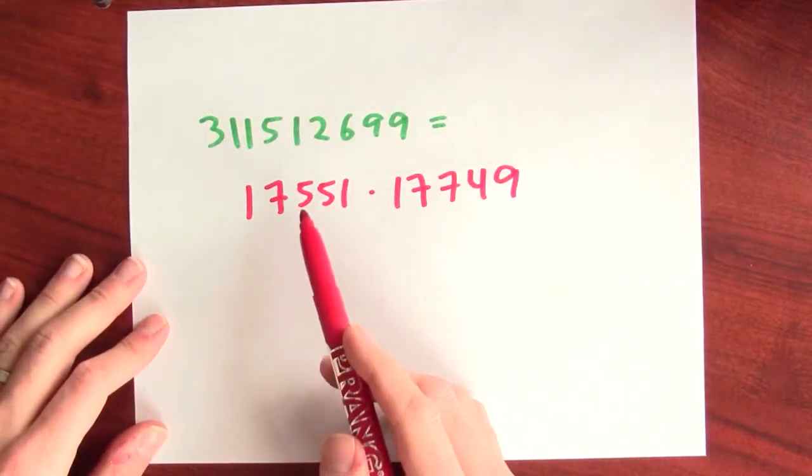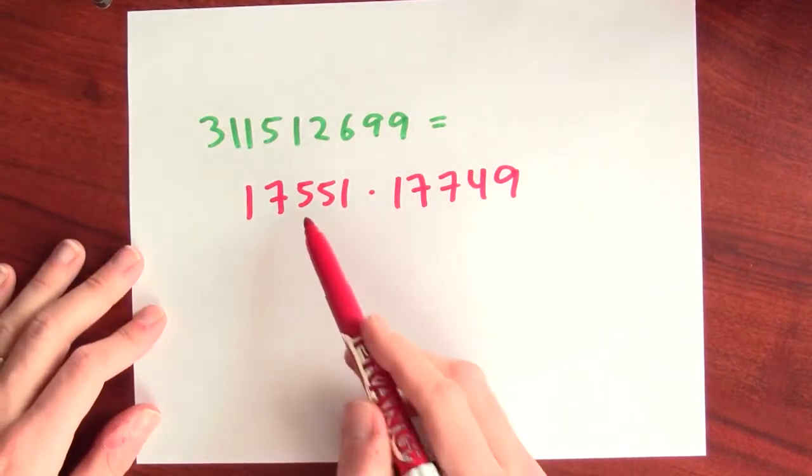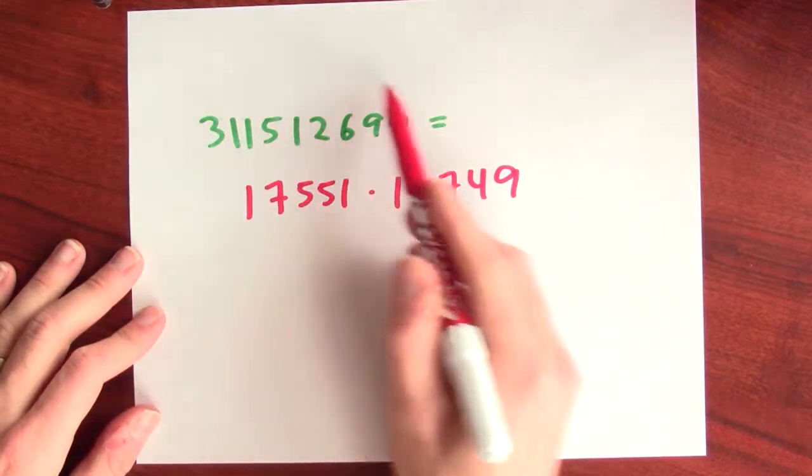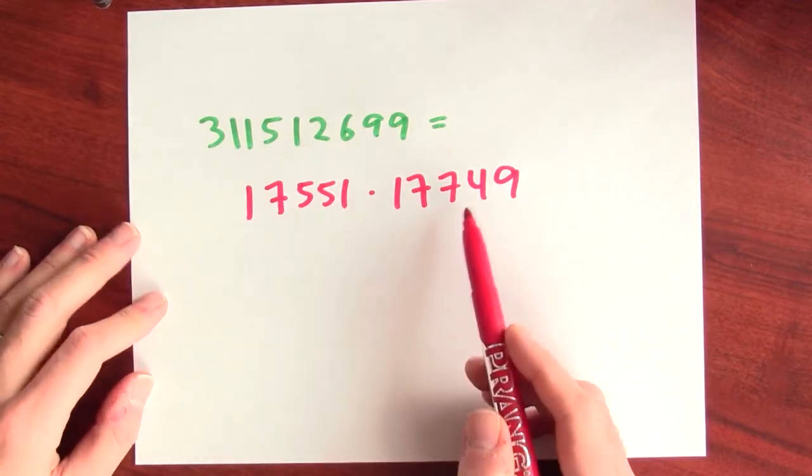And yet, if somebody tells you, do these two numbers multiply to this? That is easy to verify because you can just multiply these two numbers and check that they really give you this number. But undoing that multiplication, starting with this number and trying to find these two numbers would really be a pain.